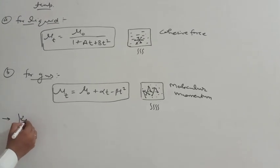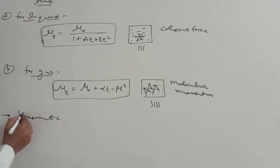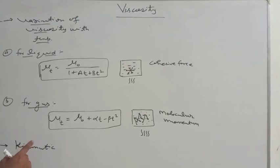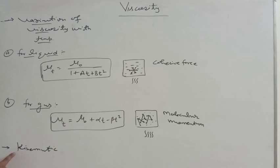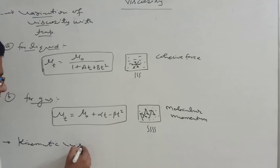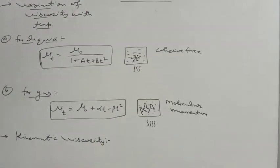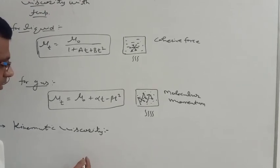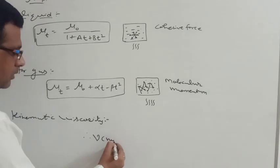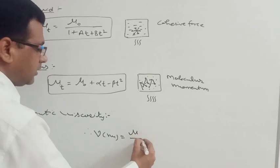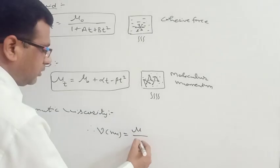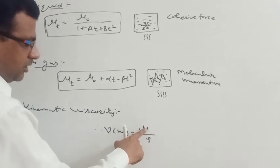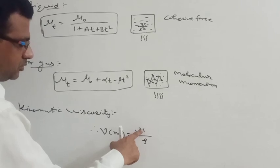The next property is also termed as viscosity but uses another name: kinematic viscosity. The viscosity we have discussed is also known as absolute viscosity or dynamic viscosity. Kinematic viscosity is the ratio of dynamic viscosity to the mass density. It is denoted by the symbol nu (ν). Mathematically, ν = μ / ρ, where μ is the dynamic viscosity and ρ is the mass density. So kinematic viscosity is the ratio of absolute viscosity to mass density.